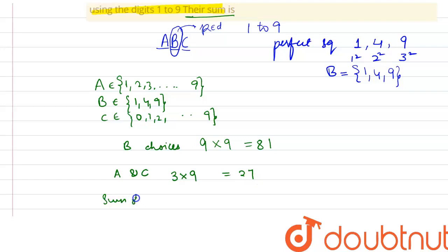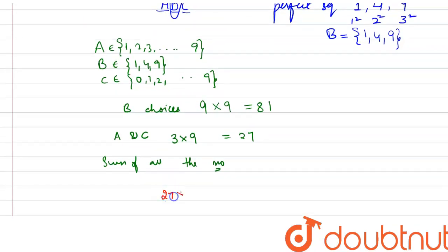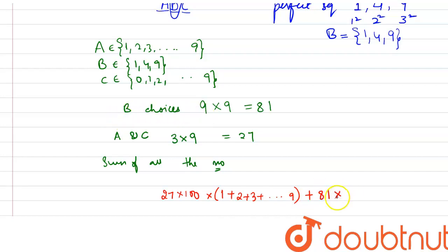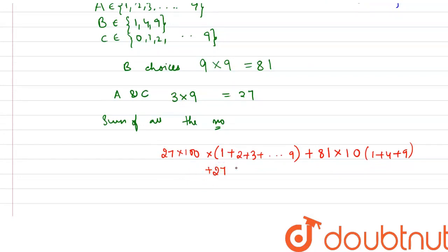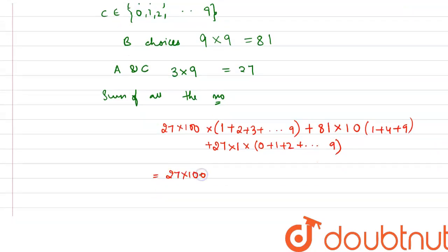The sum of all numbers is computed as follows. For the hundreds place (A): 27 × 100 × (sum of digits 1 to 9) = 27 × 100 × 45. For the tens place (B): 81 × 10 × (1 + 4 + 9) = 81 × 10 × 14. For the units place (C): 27 × 1 × (0 + 1 + 2 + ... + 9) = 27 × 1 × 45.